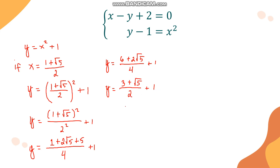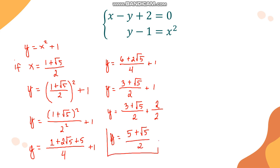Rewriting 1 as 2/2 to add it to the fraction, we get (3 plus √5 plus 2)/2, which equals (5 plus √5)/2. So if x equals (1 plus √5)/2, then y equals (5 plus √5)/2. This is our first solution.